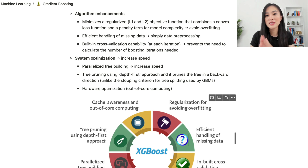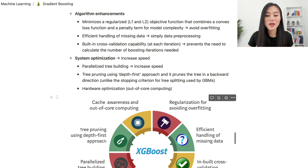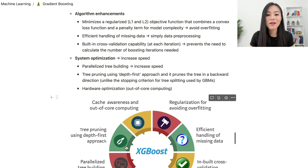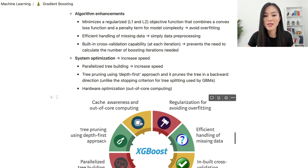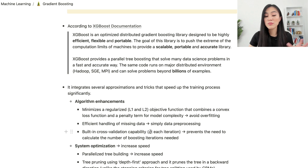XGBoost also includes system optimizations to increase training speed. For parallelization, it uses parallelized tree building. The tree pruning process uses a depth-first approach, pruning in a backward direction — unlike the greedy stopping criterion used by standard gradient boosting machines. It also has hardware optimizations such as cache awareness and out-of-core computing to increase the speed of training and prediction. These improvements make XGBoost scalable, portable, and accurate.